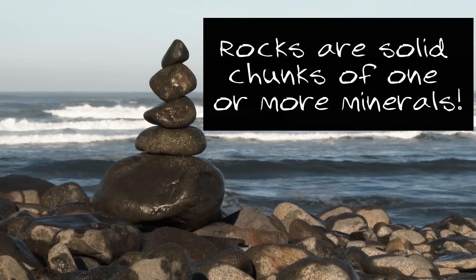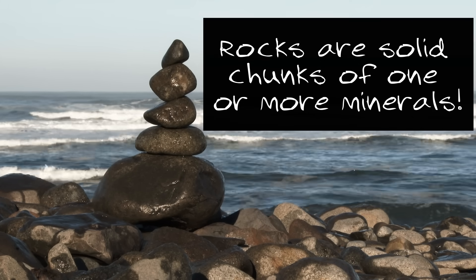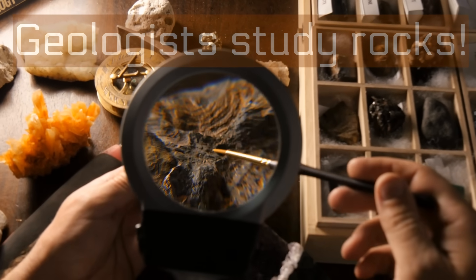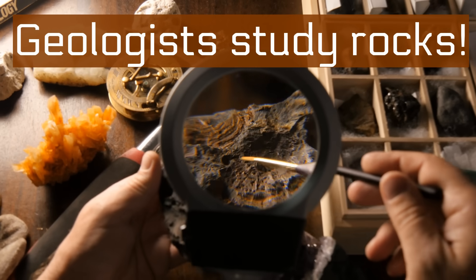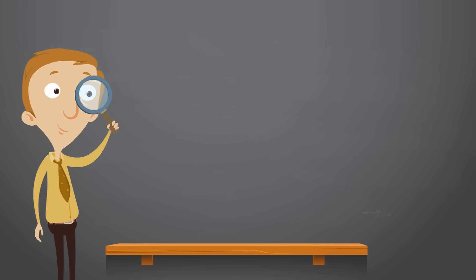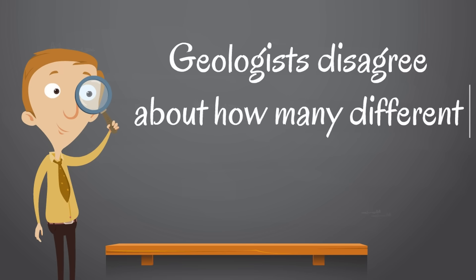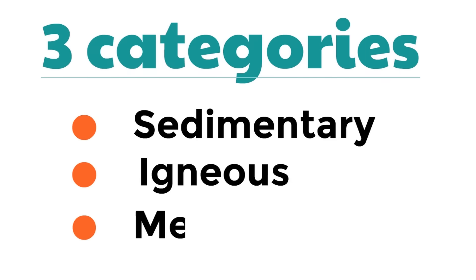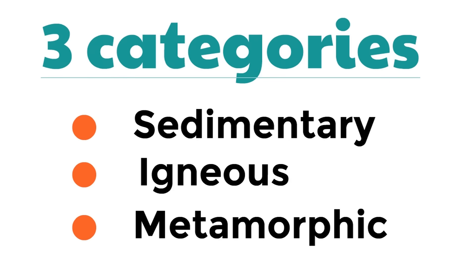Rocks are solid chunks of one or more minerals, and they are super fun to learn about. That's why geologists are so cool — geologists are rock experts. Geologists disagree about how many different types of rocks there are, but we can all agree there are so many. To make things more simple, rocks are put into three categories: sedimentary, igneous, and metamorphic. Can you say those with us? Sedimentary, igneous, and metamorphic.